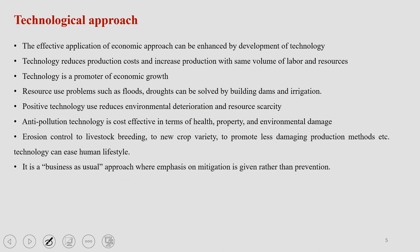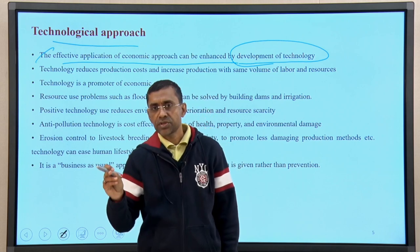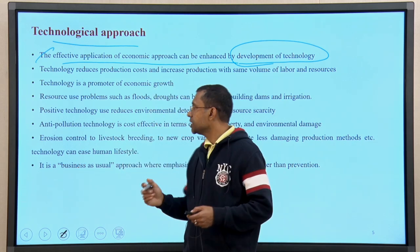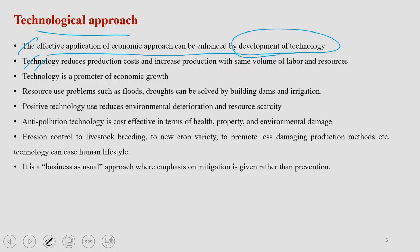Next is the technological approach. When you want to achieve economic benefit, you need to reduce cost to increase benefit, and technology is required. The technological approach looks at how effective application of the economic approach can be enhanced by development or intervention of technologies. Technology can reduce production cost and increase production with the same volume of labor or resources. If you bring in a new technology that is more energy efficient or can produce a product in less time, it will definitely enhance your production rate. Technology is also a promoter of economic growth.